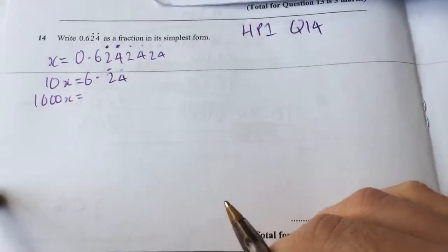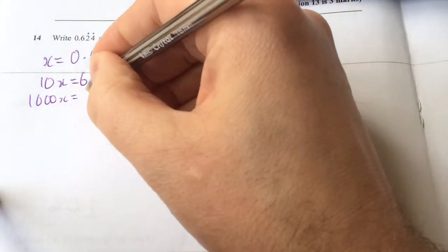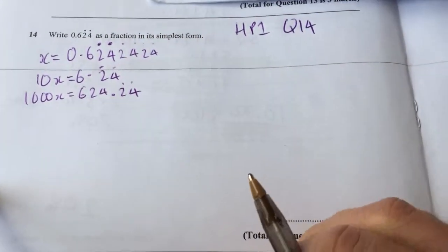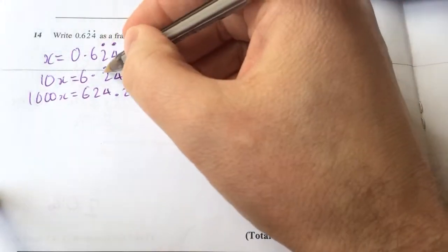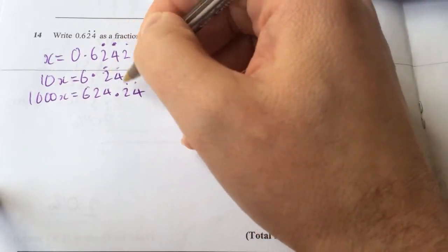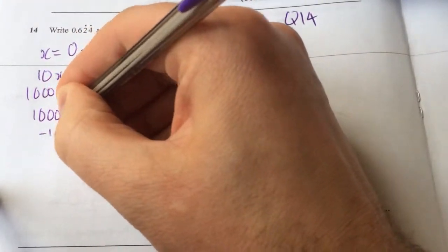So that's going to give me, from that one, 624.24, still recurring. And the reason for that is that once I've got those 2, 4, 2, 4 lined up after the decimal point, they'll cancel away when I do 1,000x minus 10x.